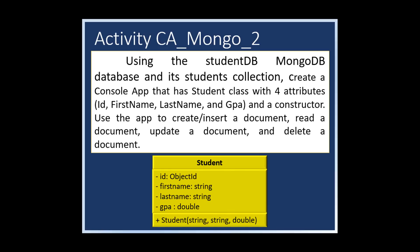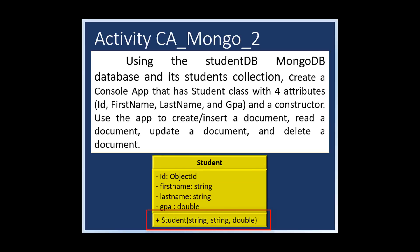In our activity, we will start by creating a database called StudentDB in MongoDB with one collection named Students. We will use this collection in our console app that has a Student class with four attributes: ID, first name, last name, and GBA, and a constructor. Later, we will create or insert a document, read a document, update a document, and delete a document.